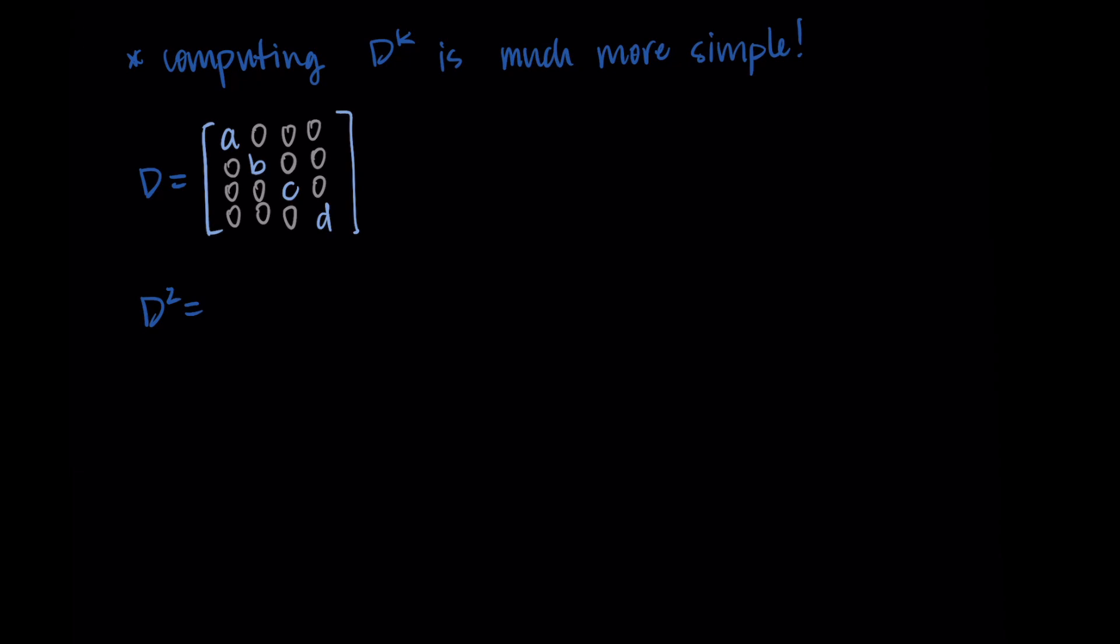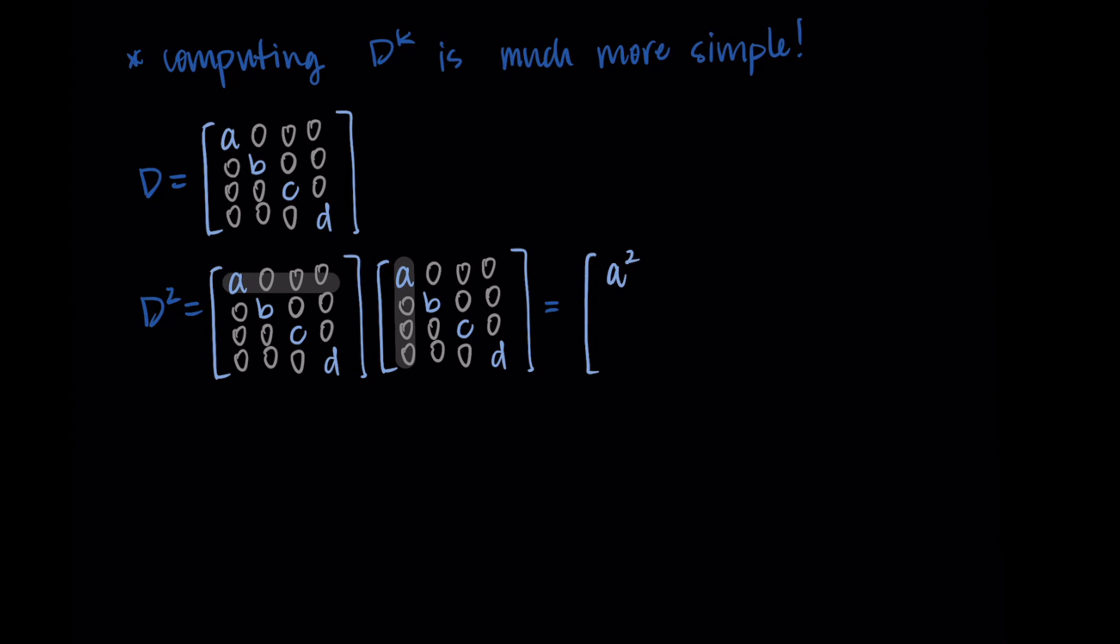With D squared, if I write D times D here, I'm going to take the first row of D, so it's A with zeros, and then multiply it by the columns of the matrix I'm multiplying by, which is also D. I'm getting A squared in the first position, then zero, zero, and zero in the next positions. If I repeat this with the row with B, I'm getting zero, then B squared, and zero, zero.